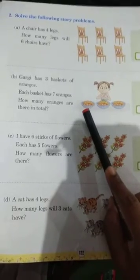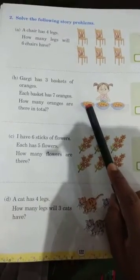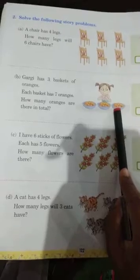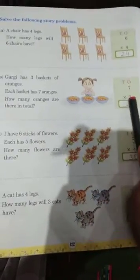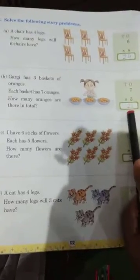So, aek basket mein kitna hai? Tien basket us ke paas. Ek, dwo, tien. Kitna basket hai? Tien basket. Aur ek basket mein seven, seven oranges hai. Is mein seven oranges hai. So, seven into three. Seven, three is twenty-one.